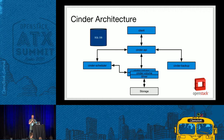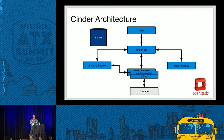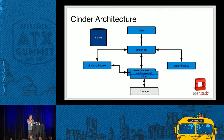Here's an overview of the Cinder architecture. It's built of three main components: the Cinder API, the scheduler, and Cinder volume. There's also the backup service and the client. What we mean by multi-backend is that you may have one or more Cinder volume instances pointing to one or more storage arrays or backends. For multi-backend, we have one instance of the API, one scheduler, but multiple Cinder volume instances talking to one or more storage backends.